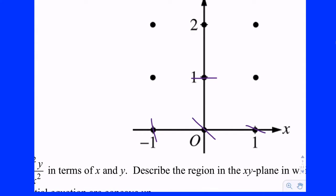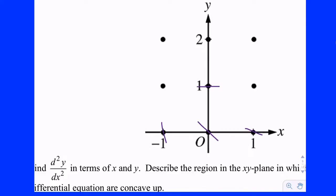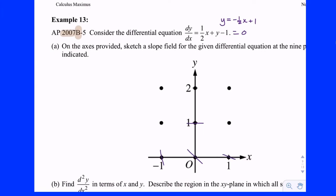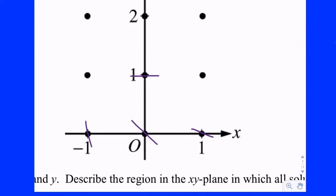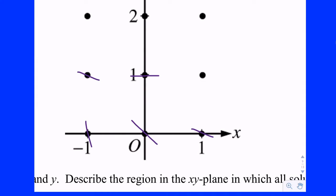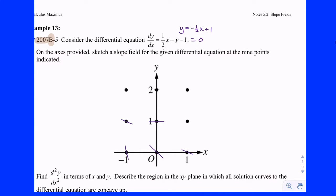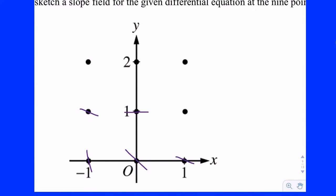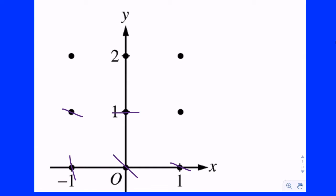Point (0, 1) gives zero — make it as horizontal as possible, erase and retry if needed. Point (-1, 1) gives negative one-half — same as the one already drawn, so copy that slope. Point (1, 1) gives positive one-half — same steepness as negative one-half but in the positive direction. Moving up: (0, 2) gives positive one — another important 45-degree reference.